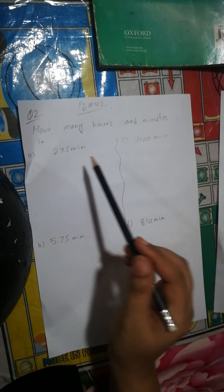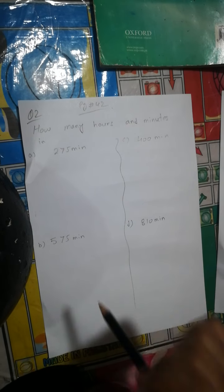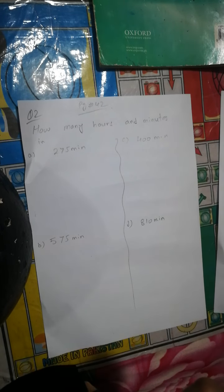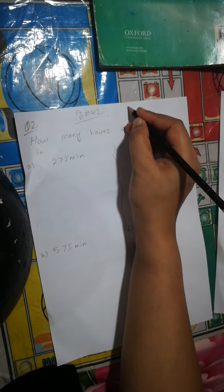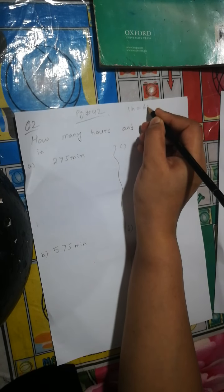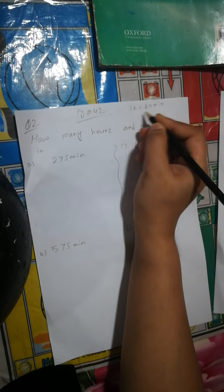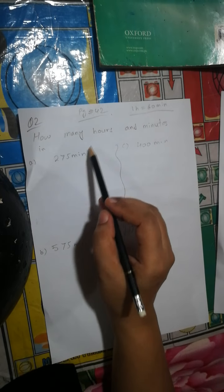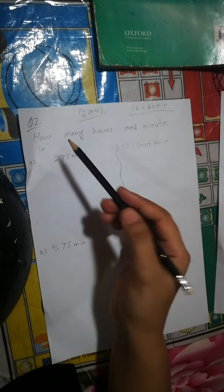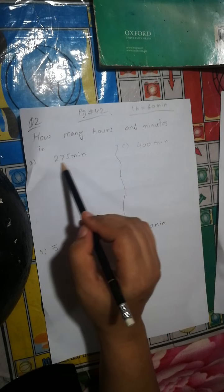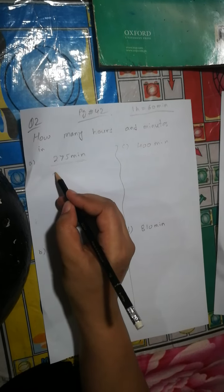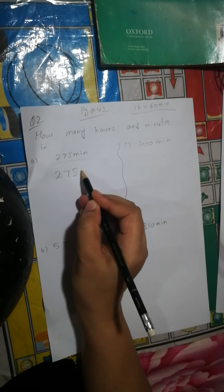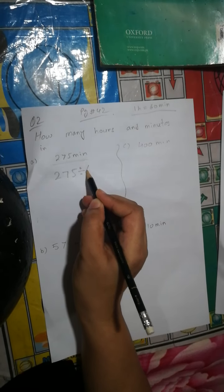The next question is: how many hours and minutes? In this question they give you minutes and you have to tell hours and minutes. For that we need to divide by 60, because one hour is equal to 60 minutes. If we know how many times 60 fits, we know the hours. So the given minutes — 275 — you will divide by 60.